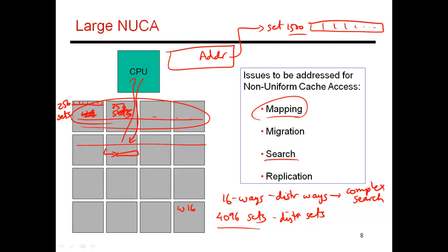Later we'll talk about a technique called page coloring, where the operating system does a very smart job deciding what page to use for any given piece of data. Because the OS has some control over the address, it also has control over the set number and the bank that the data is assigned to. So the operating system can be used to control which bank a data block gets placed in, and thus influence the latency for that block.